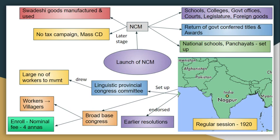There were a lot of workers joining the movement. Congress's base was widened and broadened. Congress workers went to villages to enroll members. The entry fee for Congress was reduced to make it accessible, moving away from its previously elitist character.